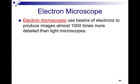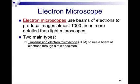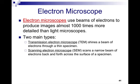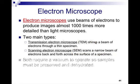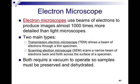The electron microscope uses beams of electrons to produce images almost 1,000 times more detailed than a light microscope. There are two main types of electron microscopes and we abbreviate them which is very important: there's the transmission or the TEM which shines a beam of electrons through a thin specimen, and then there's the scanning electron microscope or the SEM, and this scans a narrow beam of electrons back and forth across the surface. So this one will go back and forth like this and this one it goes through. Both require a vacuum to operate.